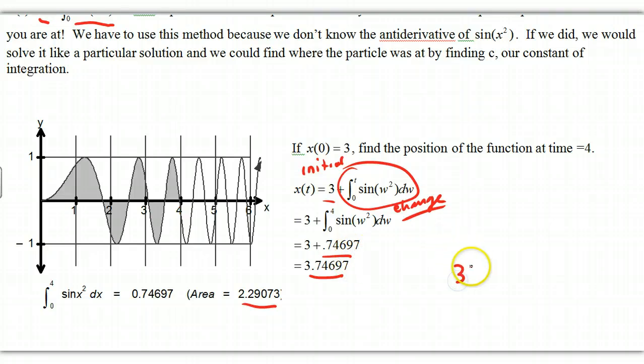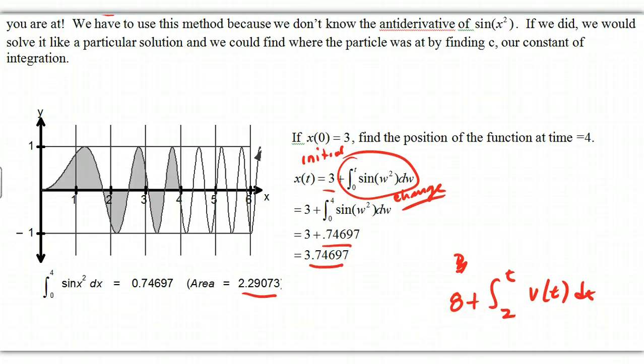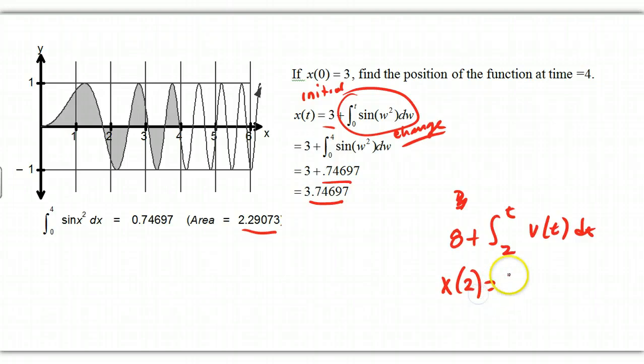Now, what you'll see also is if I did, let me take a different value. Maybe, for instance, 8 plus integral from 2 to t of v of t dt. What does this mean? Well, this probably means that my position x(2) is equal to 8. And then my net change is from 2 to t. So this lower value tells us a lot, because this is my net change from 2 to some other specific value. So if I start at 8, that tells me that x(2) is equal to 8. Ask questions if you don't understand that.